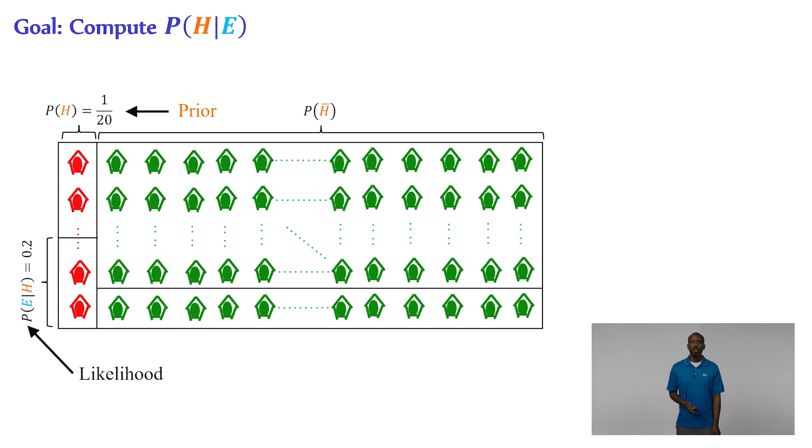We also need to know the probability of the evidence given that the hypothesis does not hold. And again, in probability theory, this bar over the variable means the complement of or not or excluding. So this would be the probability of collapse for the modern code conforming buildings.